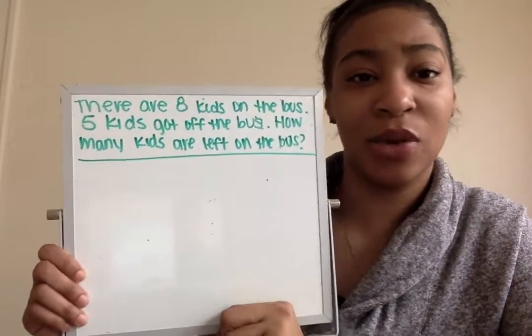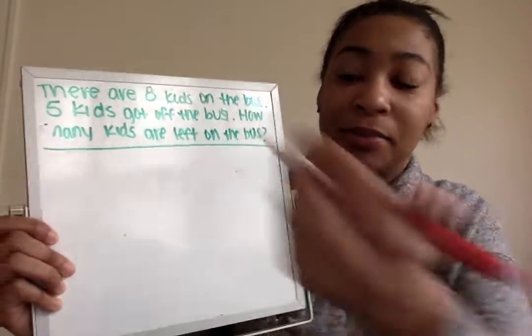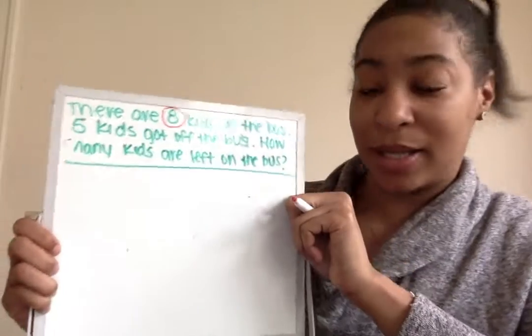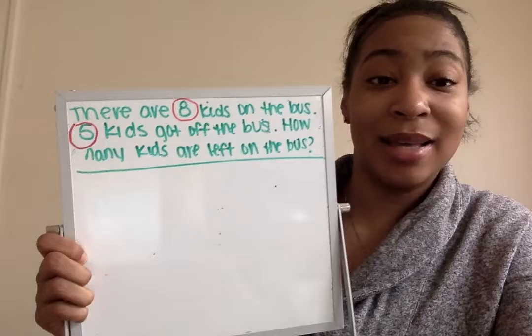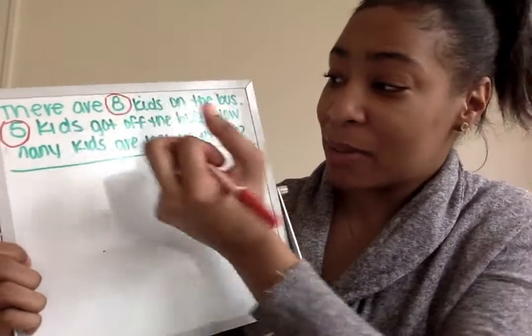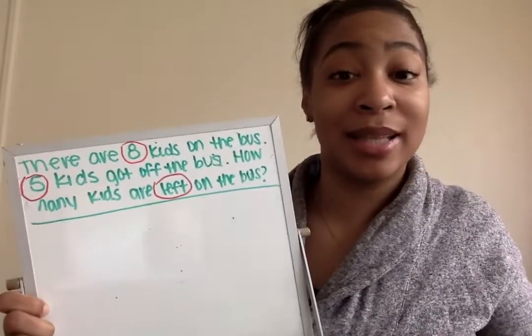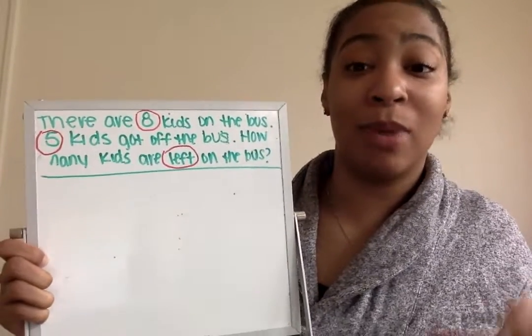So what is the first thing you all think I should do? I should circle or underline the important words or numbers in my problem. The first number I'm going to circle is the number eight, because it represents how many kids are on the bus. Then I'm going to circle the number five, because that's how many kids got off the bus. And then I'm going to circle the word 'left,' because they're asking how many are left after five kids got off the bus.